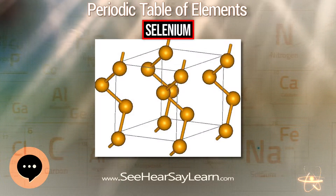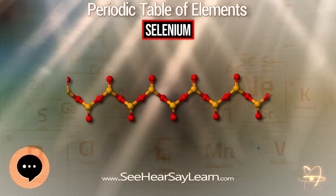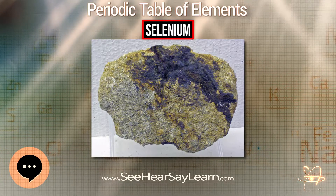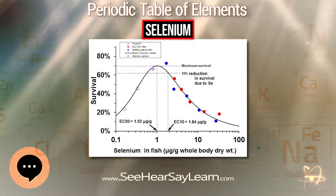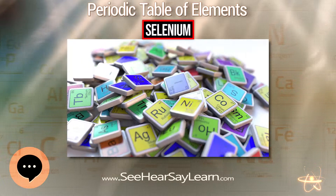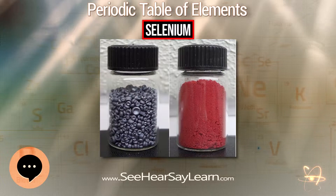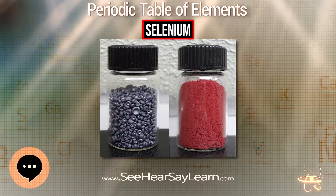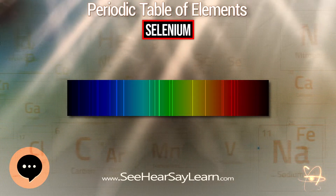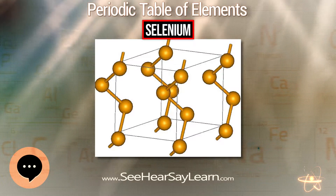Selenium was discovered in 1817 by Jöns Jacob Berzelius and Johan Gottlieb Gahn. Both chemists owned a chemistry plant near Gripsholm, Sweden, producing sulfuric acid by the lead chamber process. The pyrite from the Falun mine created a red precipitate in the lead chambers, which was presumed to be an arsenic compound, so the pyrites used to make acid was discontinued. Berzelius and Gahn wanted to use the pyrite, and they observed that the red precipitate gave off a smell like horseradish when burned, which was not typical of arsenic.